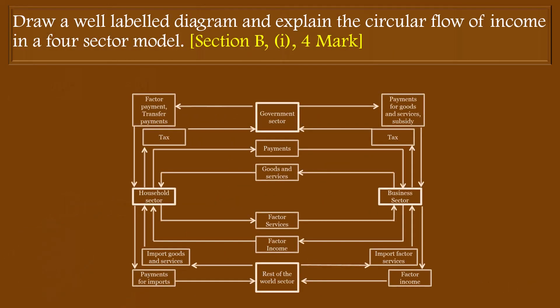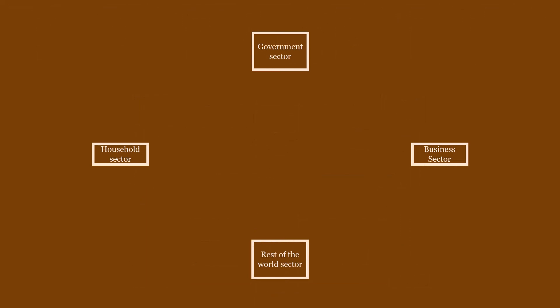Draw a well-labeled diagram and explain the circular flow of income in a 4-sector model. In this 4-sector model, there are 4 sectors: the household sector, business sector, government sector, and rest of the world sector.